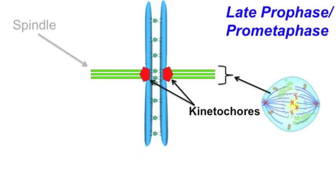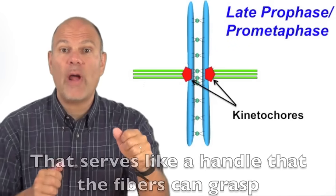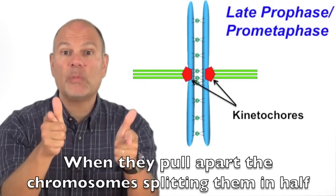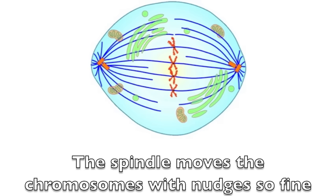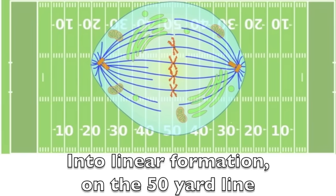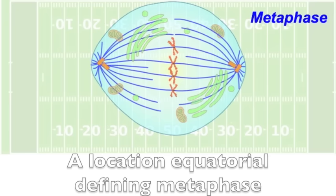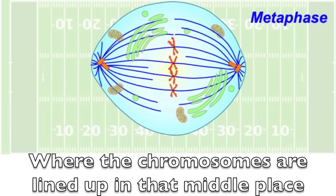When they pull apart the chromosomes, splitting them in half. The spindle moves the chromosomes with nudges so fine into linear formation on the fifty-yard line. A location equatorial, defining metaphase, where the chromosomes are lined up in that middle place.